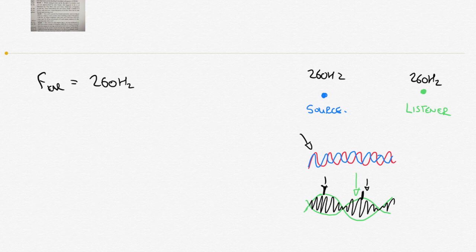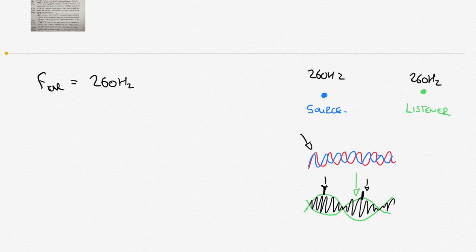The problem tells us the source is moving towards the listener. You're stationary in your car emitting 260 Hertz, and your friend is moving towards you. Because of the Doppler effect, that results in an increased frequency as observed at the listener's position — the waves bunch up, increasing the frequency. That increased frequency interferes with the regular 260 Hertz that the listener is emitting, causing a beat wave.